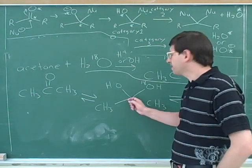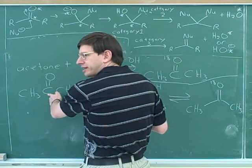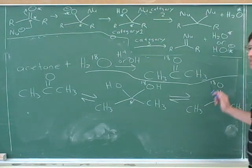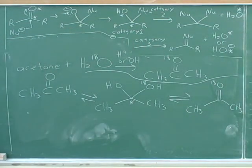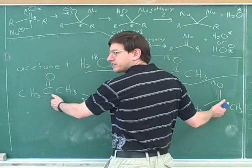Yeah, so we would expect that after we make this intermediate, sometimes it'll reverse and give us back the original oxygen. But sometimes when it reverses, we'll be left with the oxygen 18. Yeah. So we can go to 2. We would expect to end up with both of these.